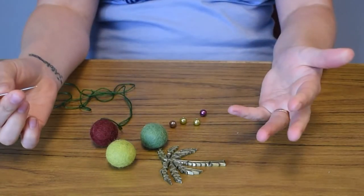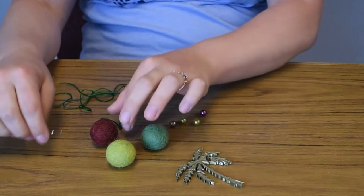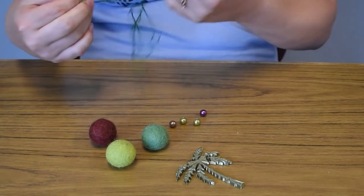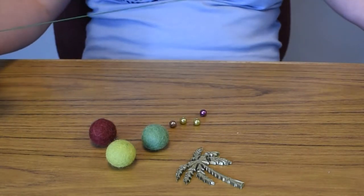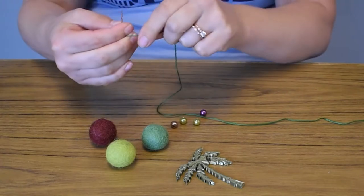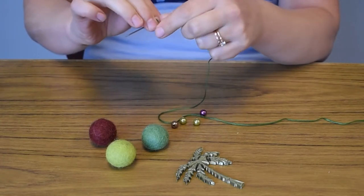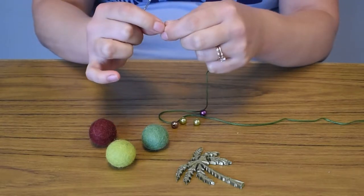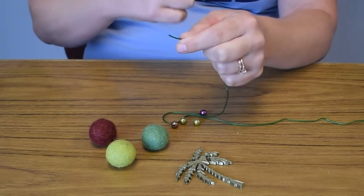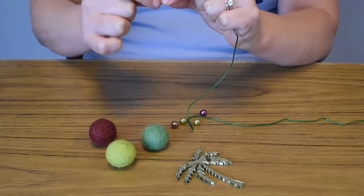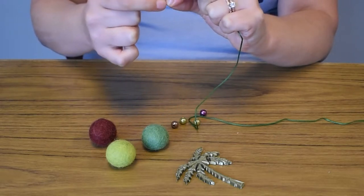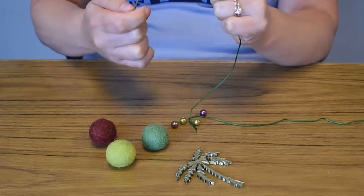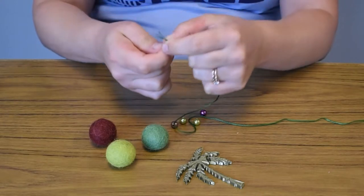This is super easy. So first you will want to start out by threading your needle, and this is pretty easy. You can always just wet the tip of your embroidery floss and it will go through a little bit easier. Just like that.